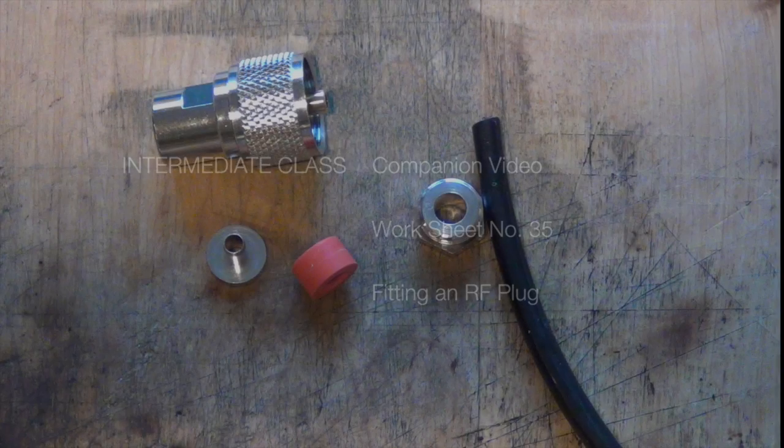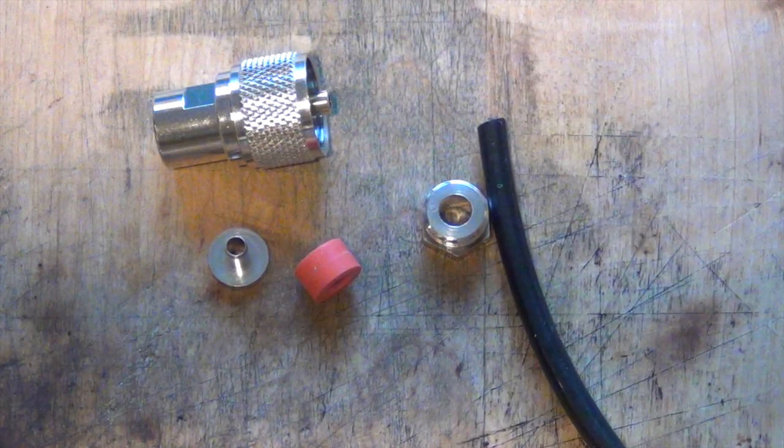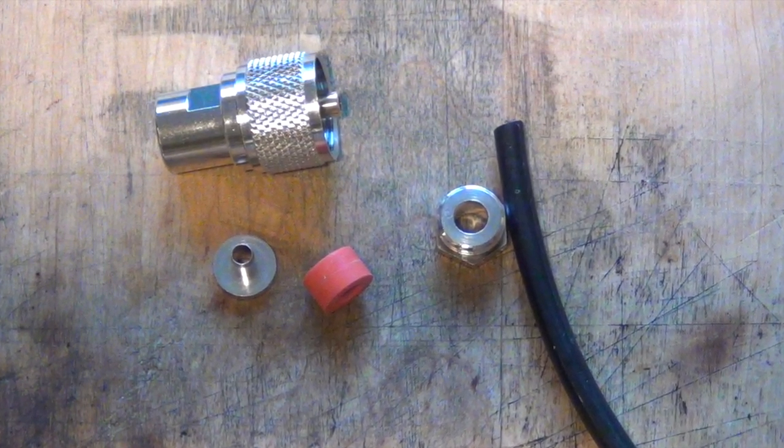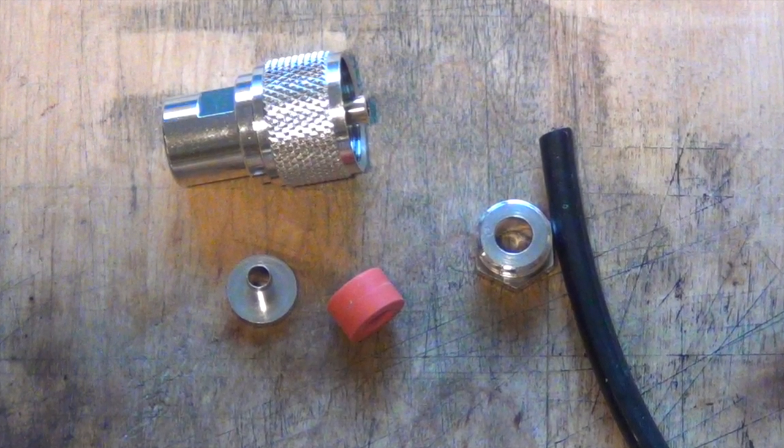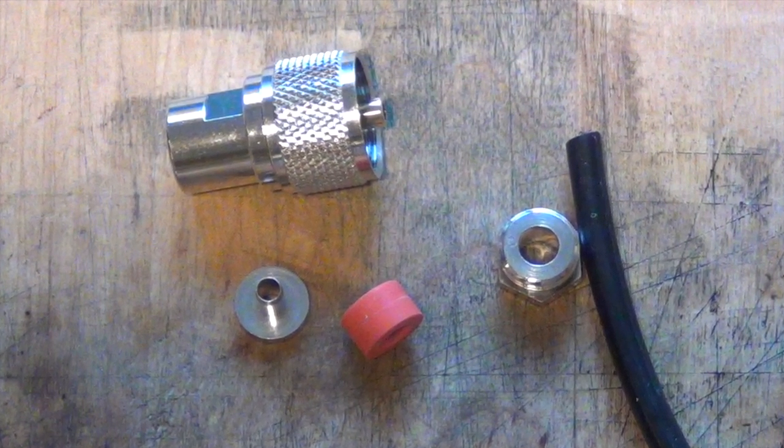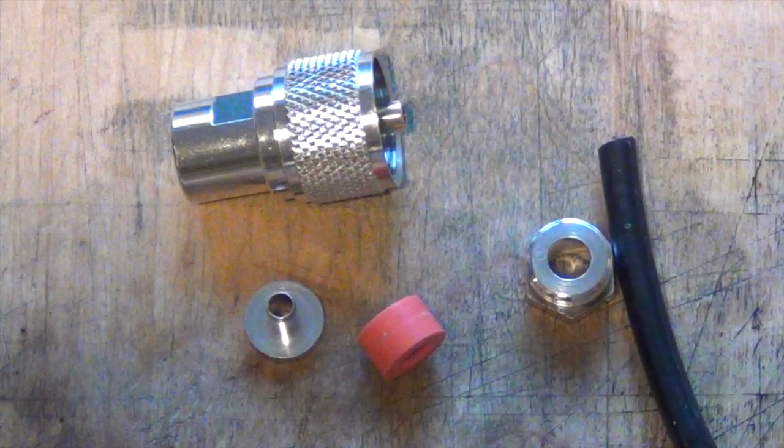Hello and welcome to another companion video for our distance learning students. In this video I'll be looking at fitting an RF connection. In particular today I'll be fitting a PL259 to a short piece of coax. This video is a companion to worksheet number 35 in the intermediate book, which gives guidance on practical assessment that requires us to make an RF connection using either a BNC or PL259 connector.